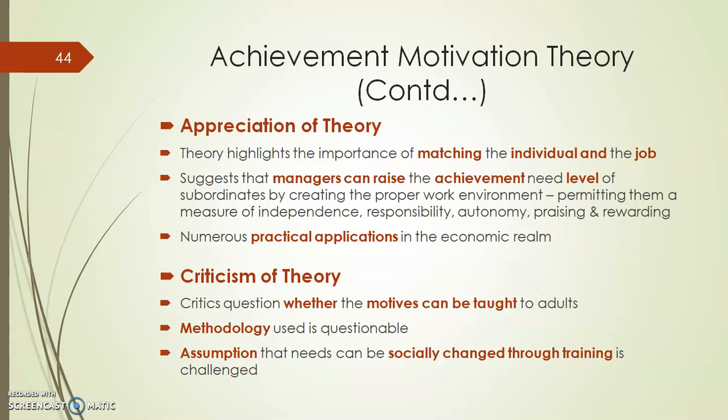For example, politicians at rallies can change people's minds. McClelland counters that adult behavior can be changed and altered in a relatively short time. A second criticism is that needs are not permanently acquired — people's needs are constantly changing. The methodology of the theory is also questioned as not being scientifically appropriate. There is also a criticism of the assumption that needs can be socially changed through training.